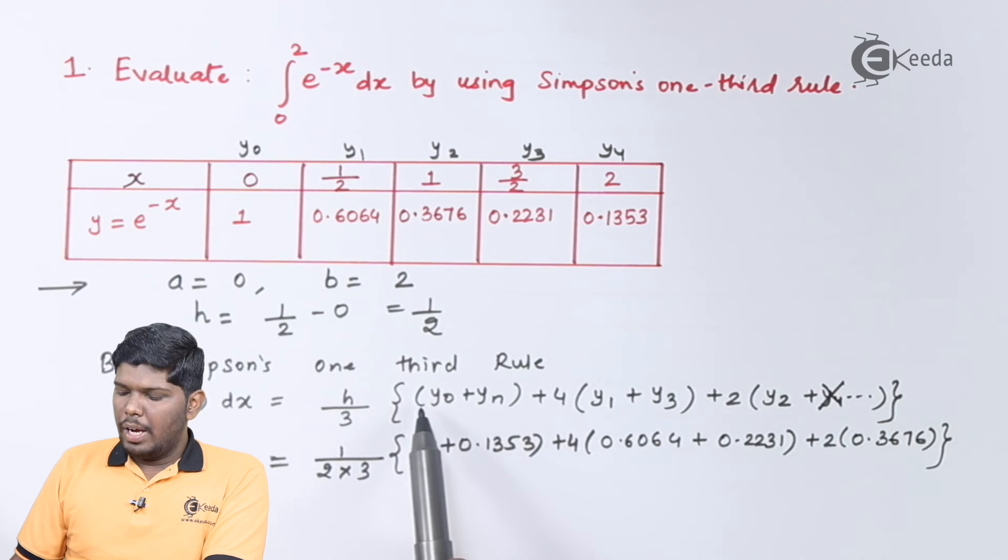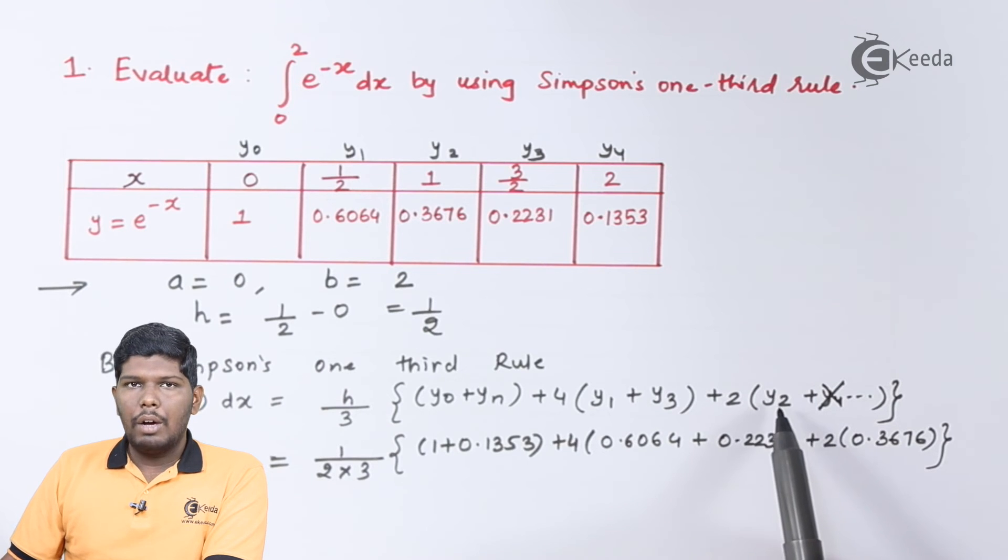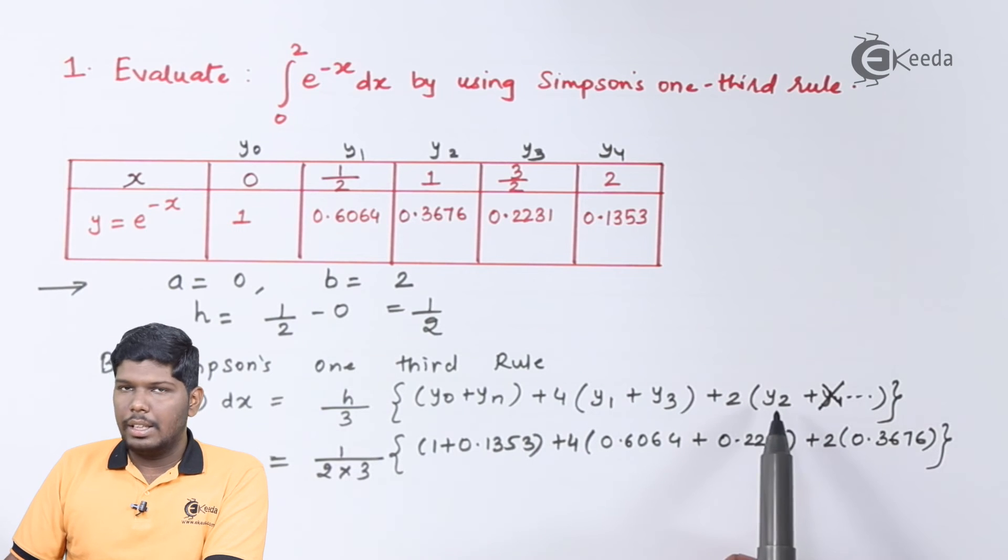So we have substituted the value of y₀ and y₄. Here we have only two even positions, that is y₁ and y₃, and here we have only one odd position which is not at the first and last, that is nothing but y₂.